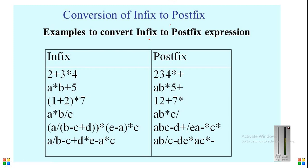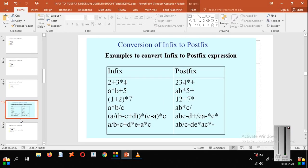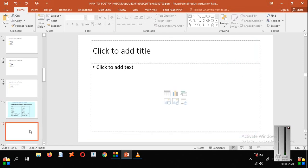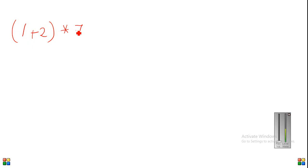Let's look at some more expressions. We have a star b slash, okay, one plus two in brackets into seven. Starting with simple expressions, now we have a new term because we are encountering brackets. So for the expression one plus two star seven, since we have brackets, we have to give higher priority to the brackets.